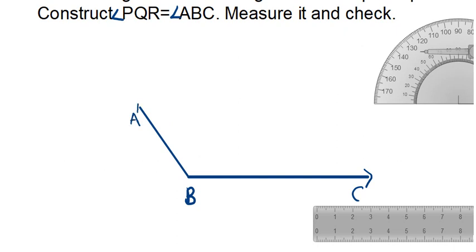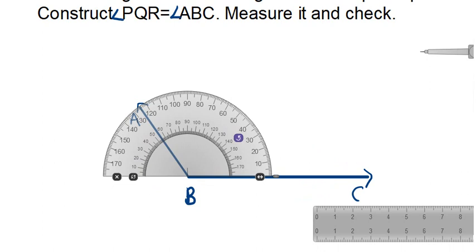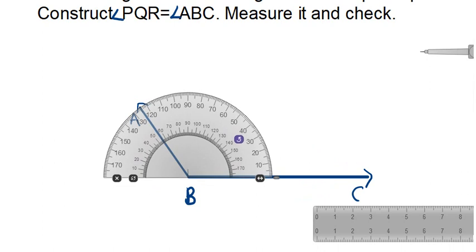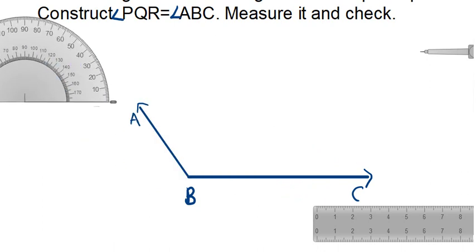Make the arrows — that's most important. This measures 125 degrees, we can check it with the protractor. You can see it's 125 degrees. This is angle ABC. Now we will make angle PQR with the help of our compass and ruler.